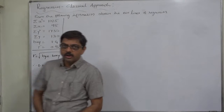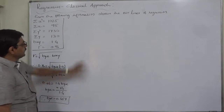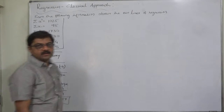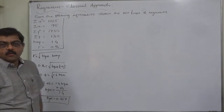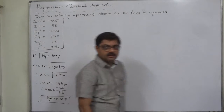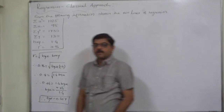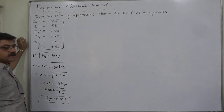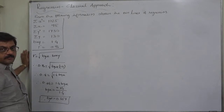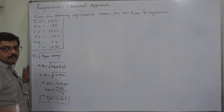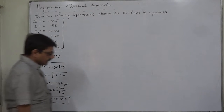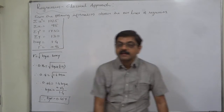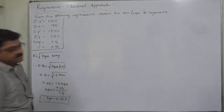Now we have both coefficients of regression. We just need the two means to arrive at the two lines of regression. Means: x bar = sigma x / n, y bar = sigma y / n. We have sigma x = 95, sigma y = 130, but we don't have n, the number of observations. So we first need to find n.